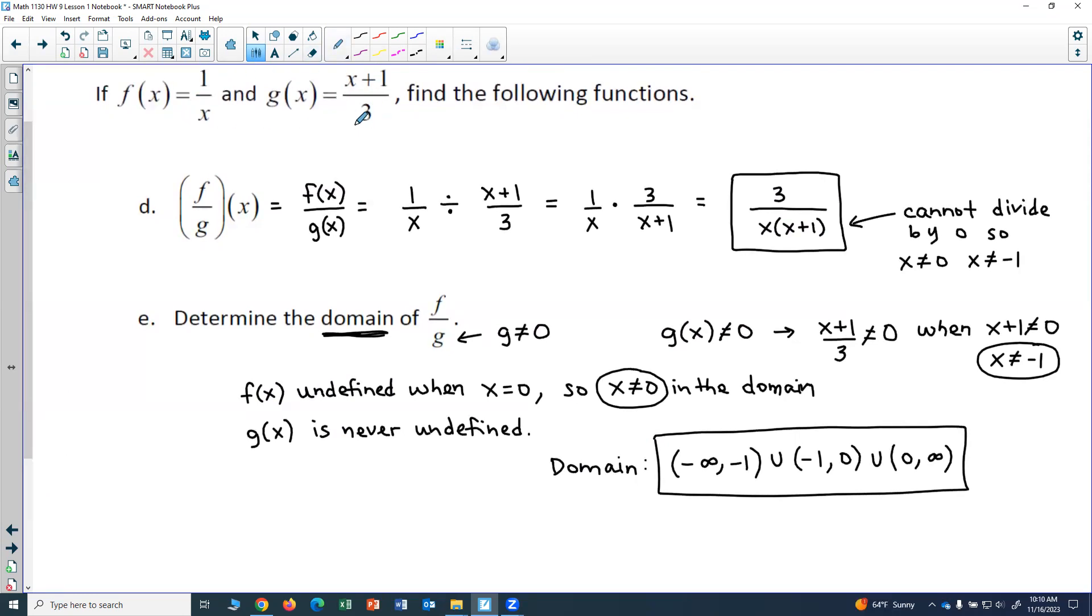So really what you do is you look at any restrictions in the domain of the original functions. And in this case, we had quotients, so the restrictions where you can't divide by 0. And then also you look at your finished product and any restrictions on that.